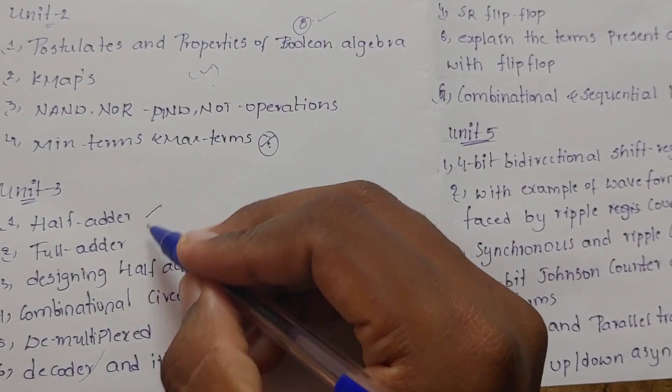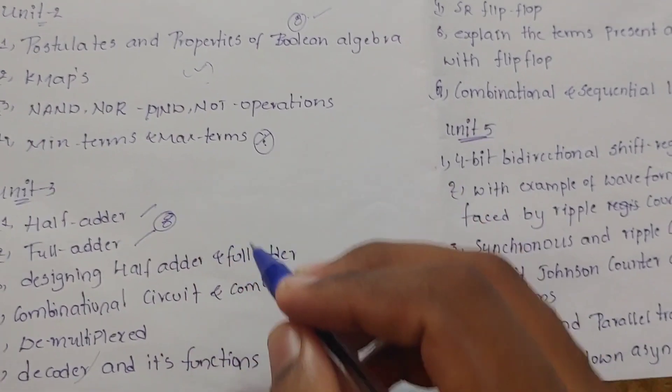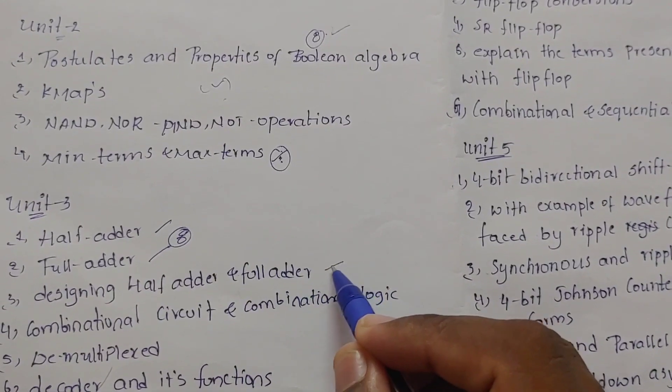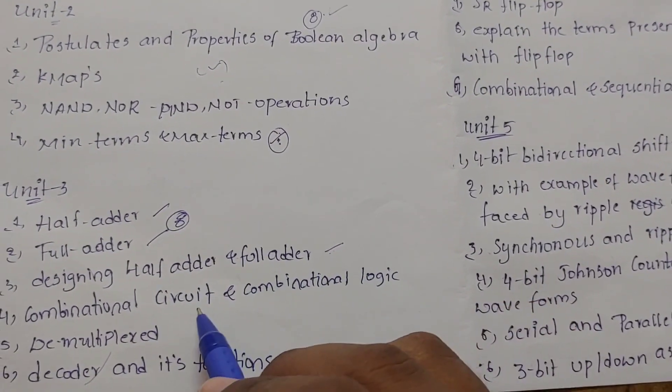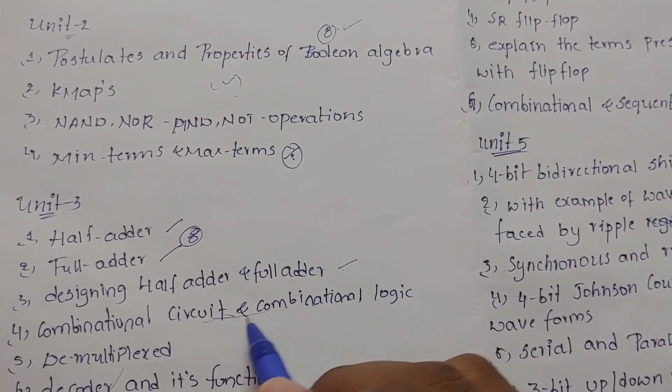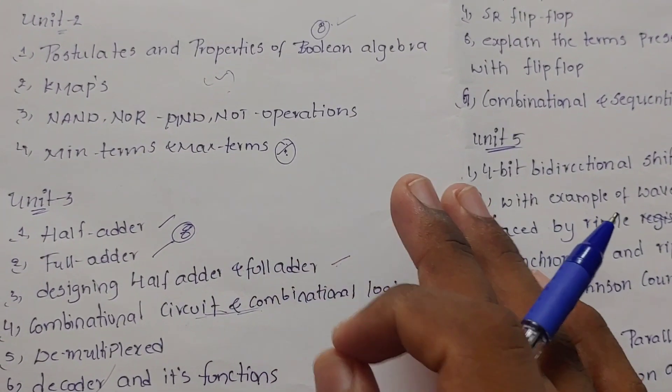Coming to unit 3, half adder and full adder - compulsory 8 marks. Second is designing of half adder and full adder.